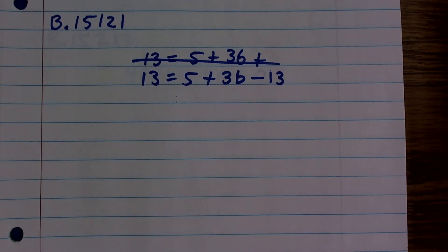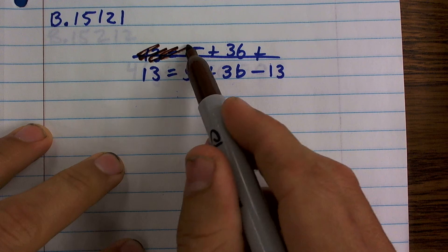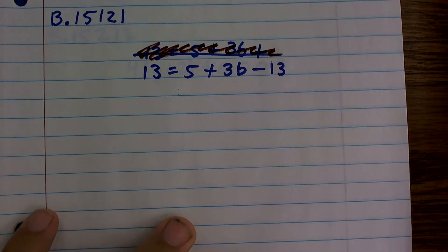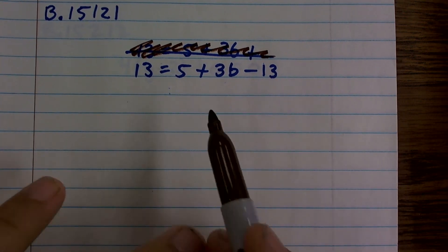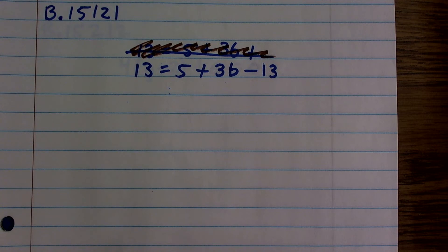All right, this ain't the greatest work of art. You can see as I scratch this out, so we'll do that kind of again here. But the problem I want to solve is 13 equals 5 plus 3b minus 13.